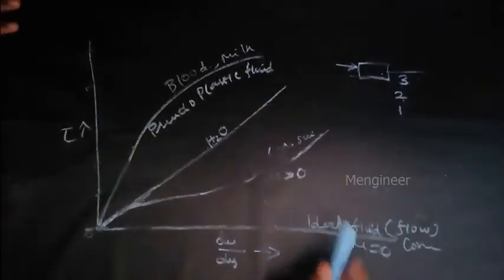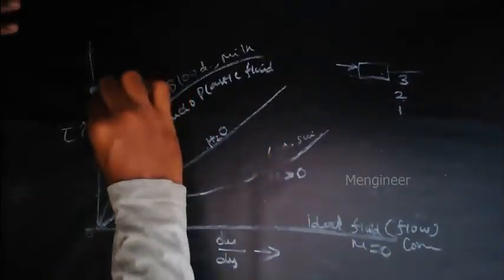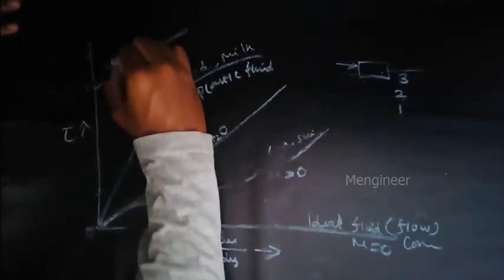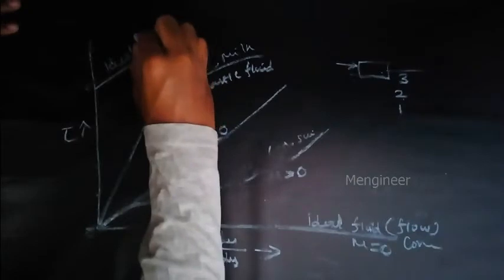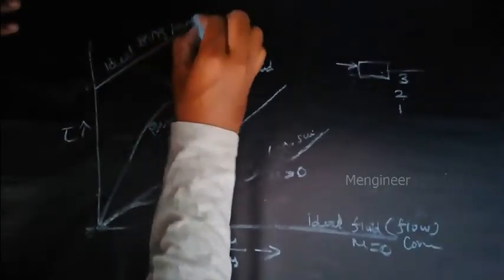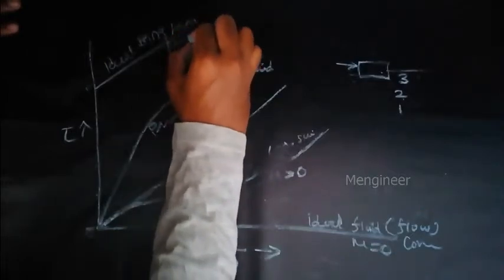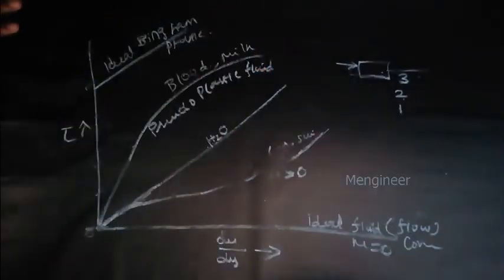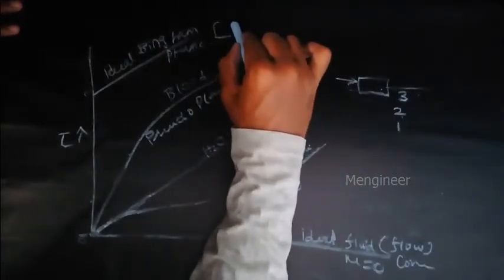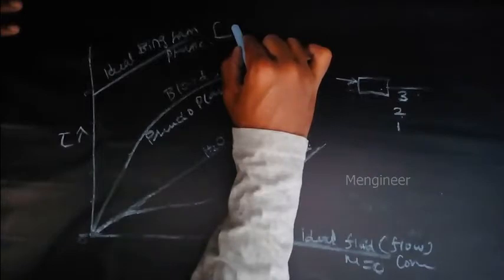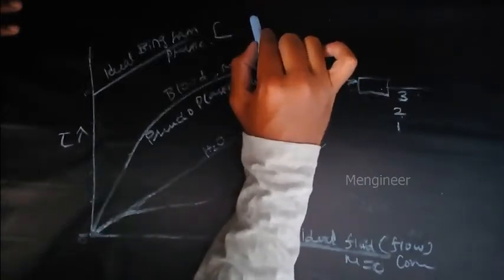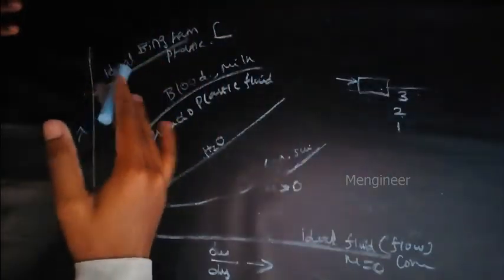Next is the ideal Bingham plastic. Ideal Bingham plastic. Example for this fluid is drilling mud, sewage sludge, oil paint, cement slurry. All these are examples of ideal Bingham plastic.